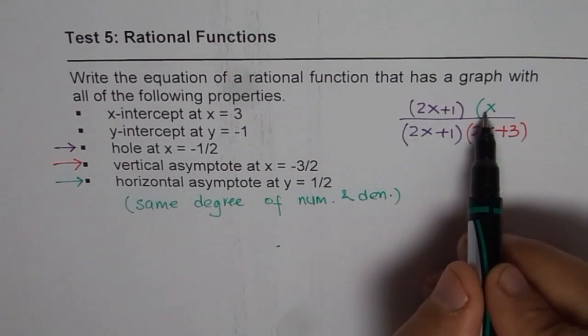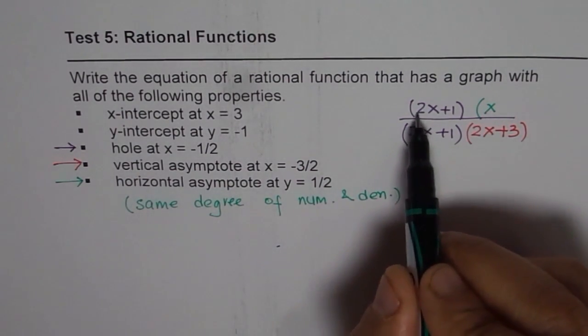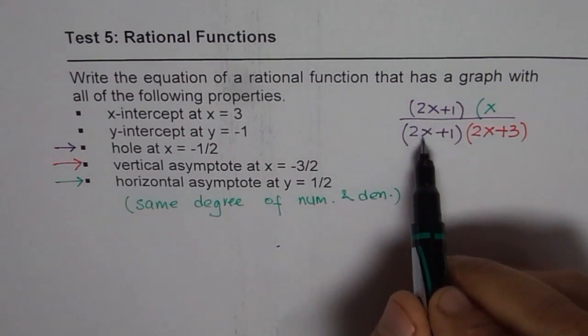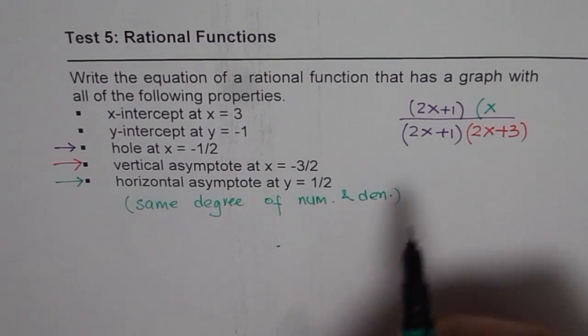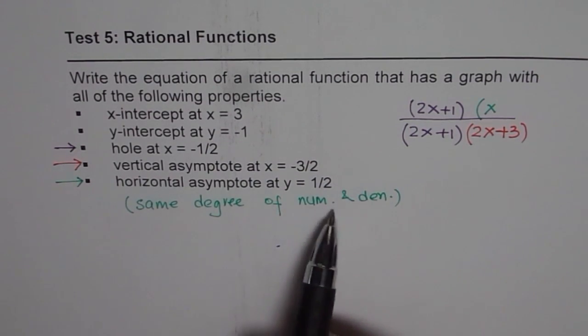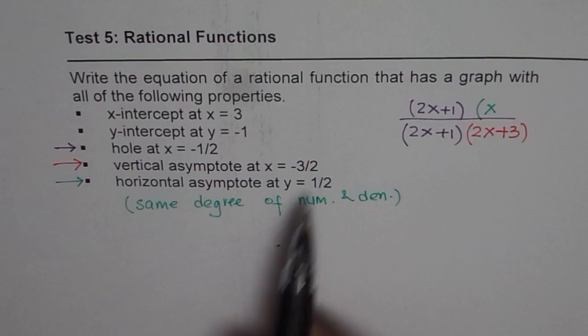Now, the coefficient of that factor should be such that the ratio is 1 over 2. Now, we have 1 is a good number to take. 2 times 1 is 2 and 2 times 2 will give me 4. 2 divided by 4 is half. So, that takes care of it. Do you see that? So, that is how I can take care of the same degree and horizontal asymptote of half.